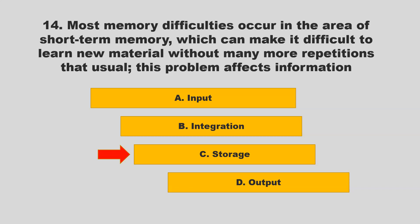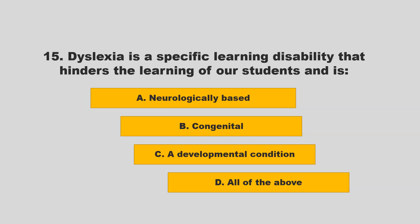Dyslexia is a specific learning disability that hinders the learning of our students and is: A) neurologically based; B) congenital; C) a developmental condition; D) all of the above. If you chose D — all of the above — you are correct.